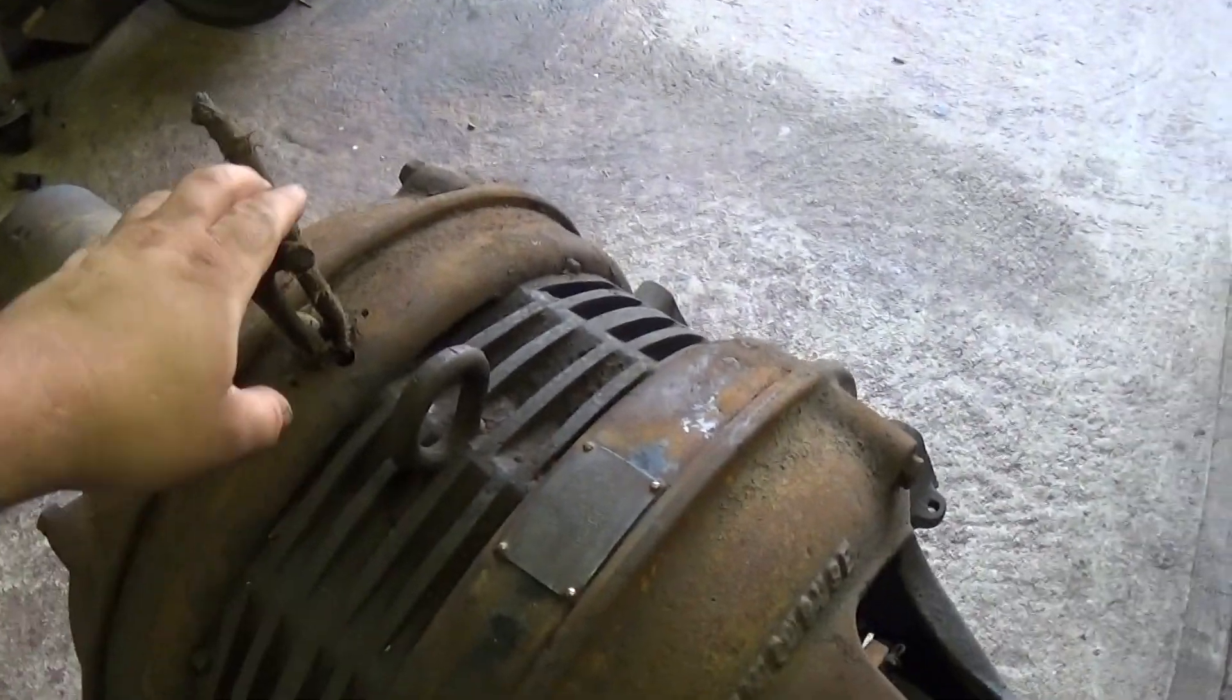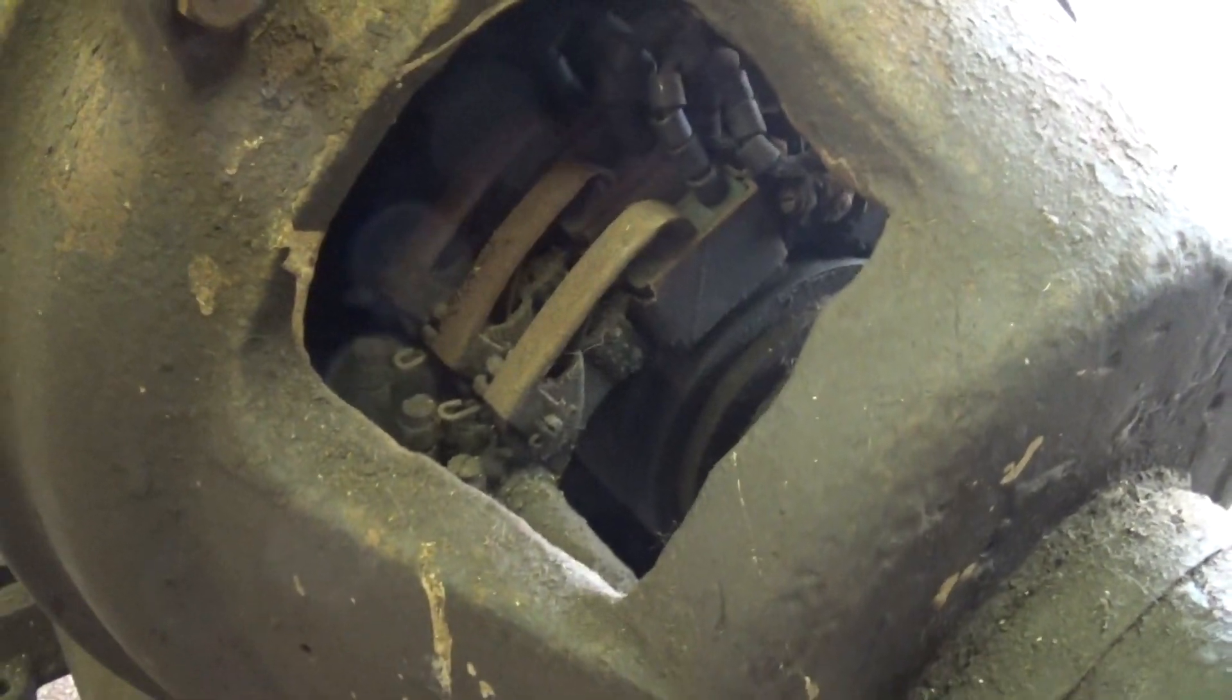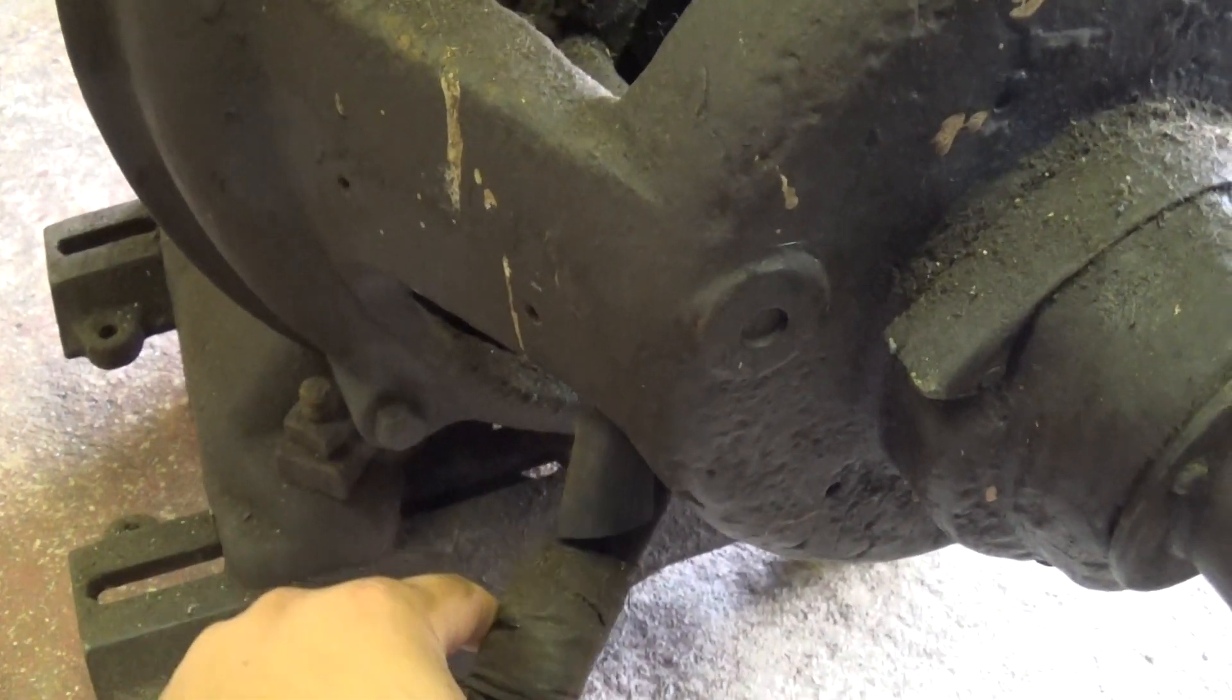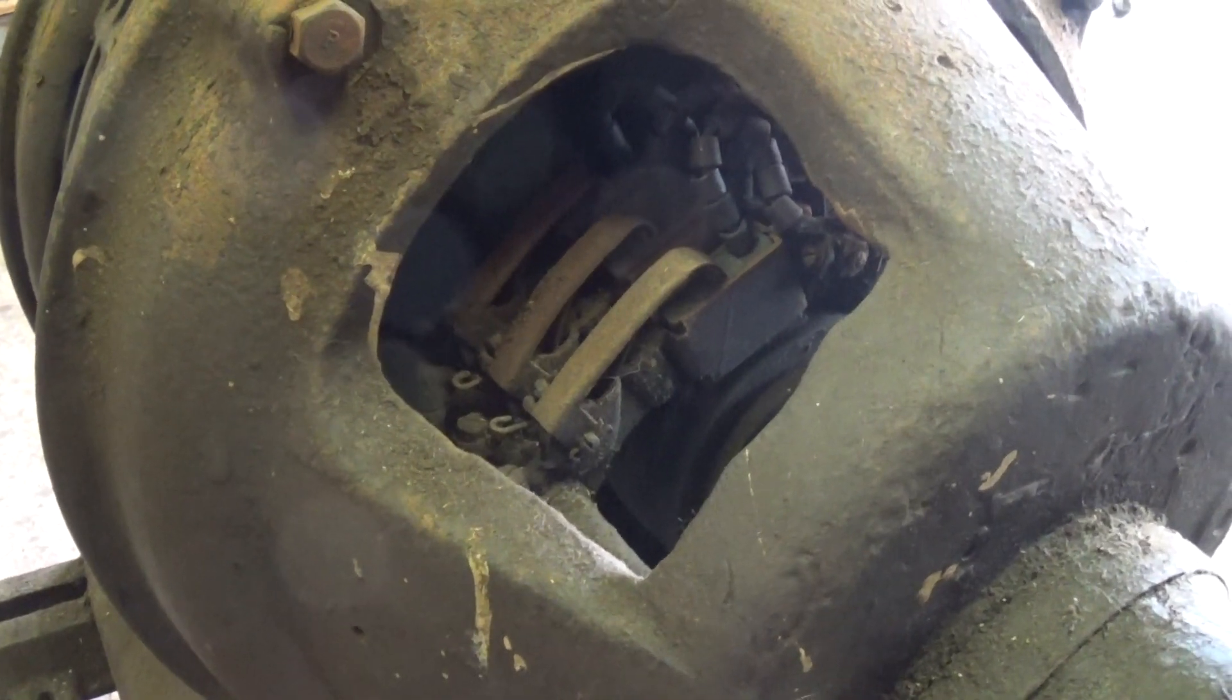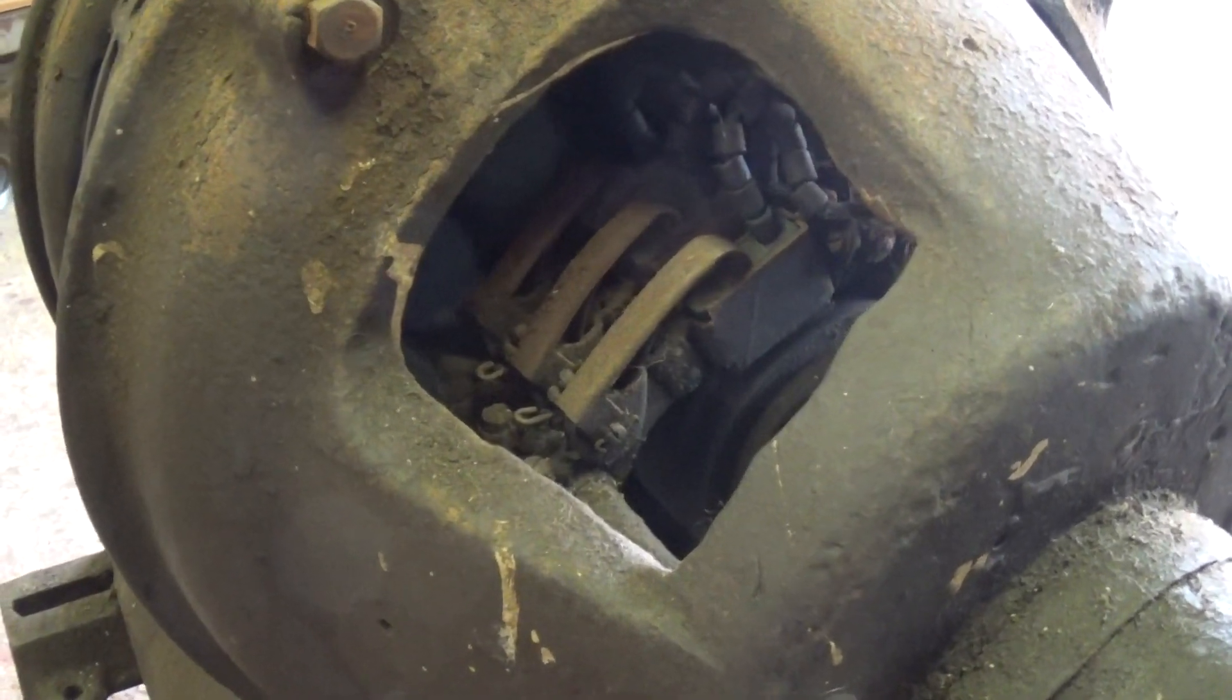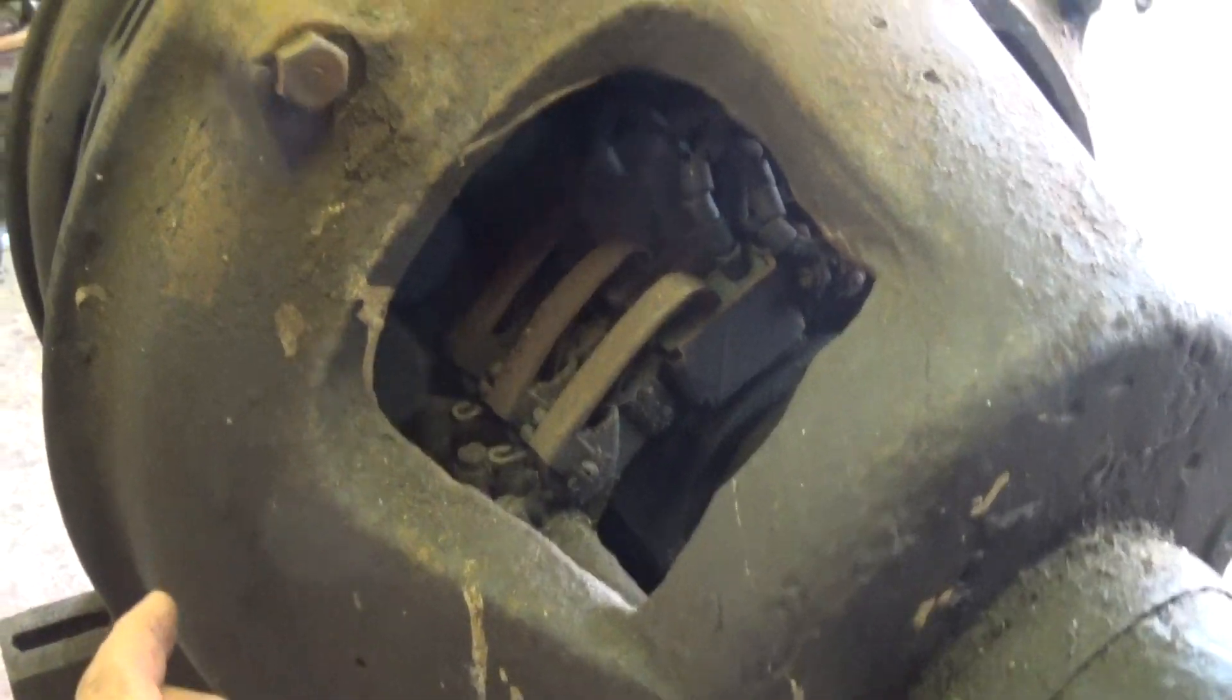So you've got three phase power coming in here to the stator. And then you've got three collector rings on the armature, or the rotor, and they're brought out here. And typically this would go to a triple ganged rheostat of some sort to vary the resistance in the armature windings. And varying that resistance would either increase or decrease the amount of slip the armature had with respect to the rotating field in the stator.